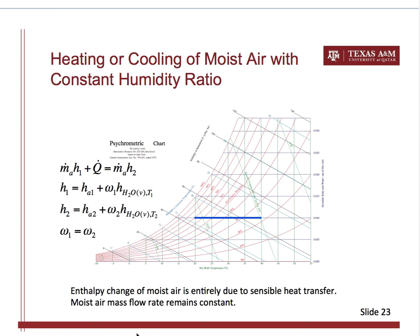Now let's make sure that we understand constant humidity ratio does not mean constant relative humidity. These are absolutely two different things. Constant humidity ratio in general means the relative humidity cannot be constant if the temperature changes.